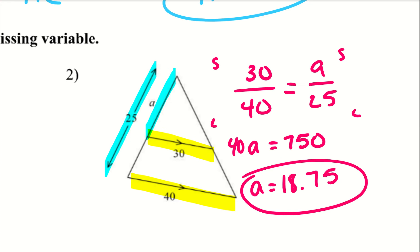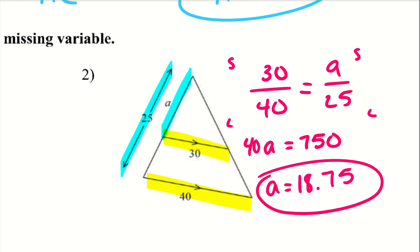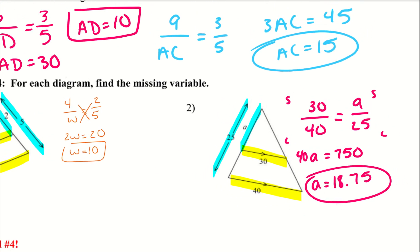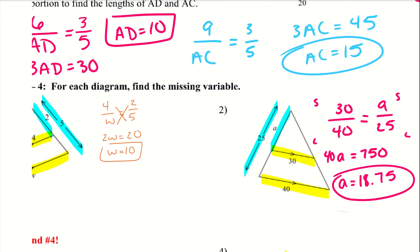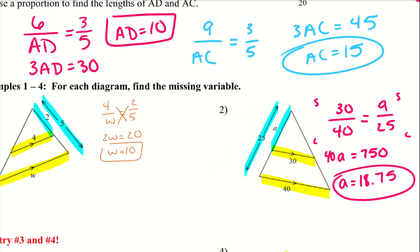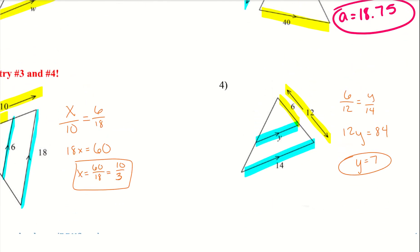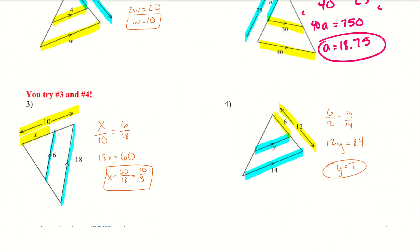I want you guys to go ahead and try examples 3 and 4 — they're set up very similar to 1 and 2. I'm going to pause the video and then show you the solution. Alright, here are 3 and 4. I highlighted them for us. We have X over 10 equals 6 over 8. And over here on the right, I have 6 over 12 equals Y over 14.